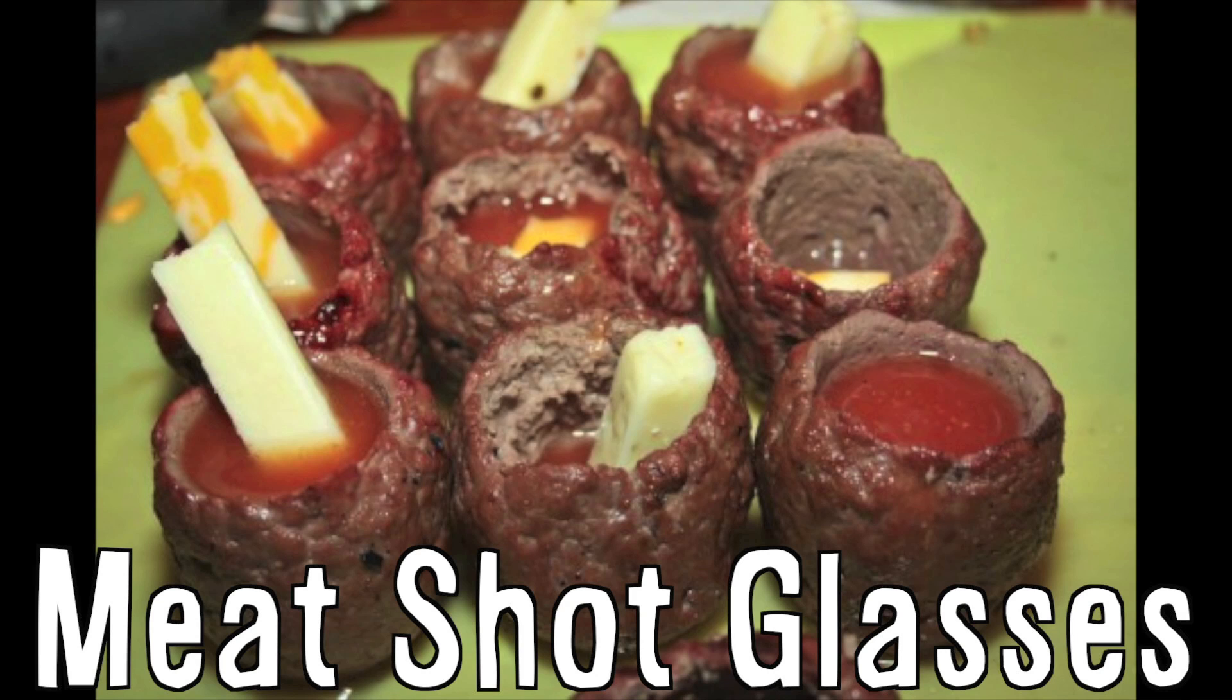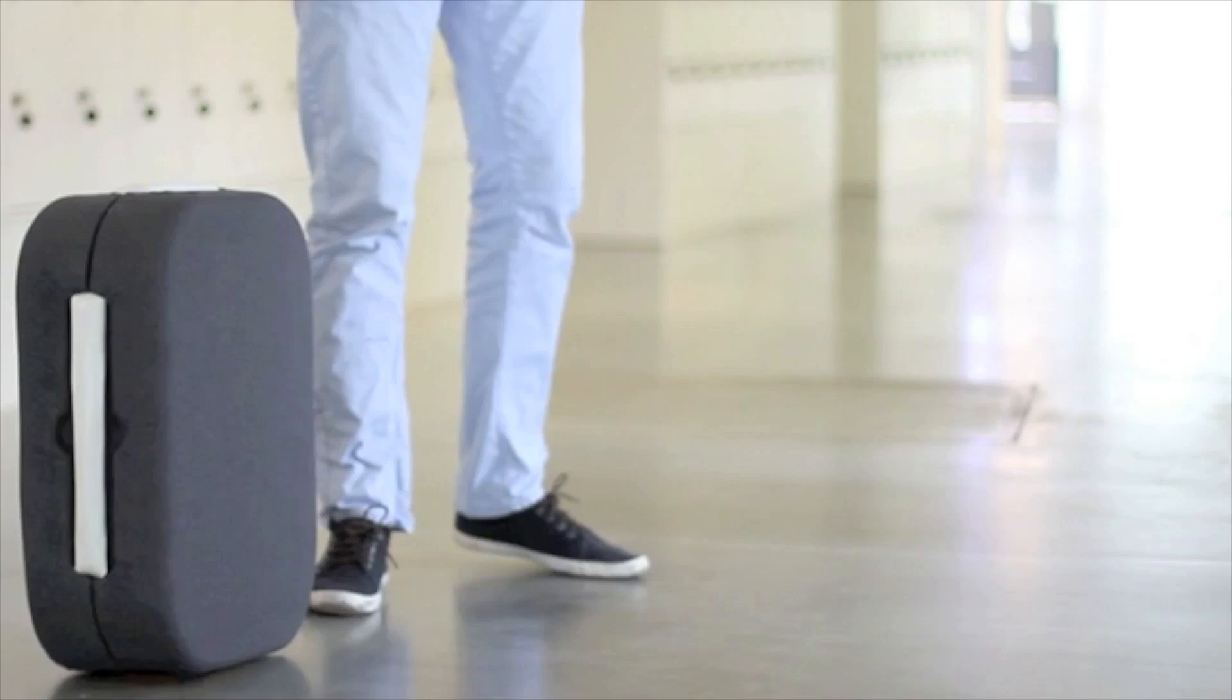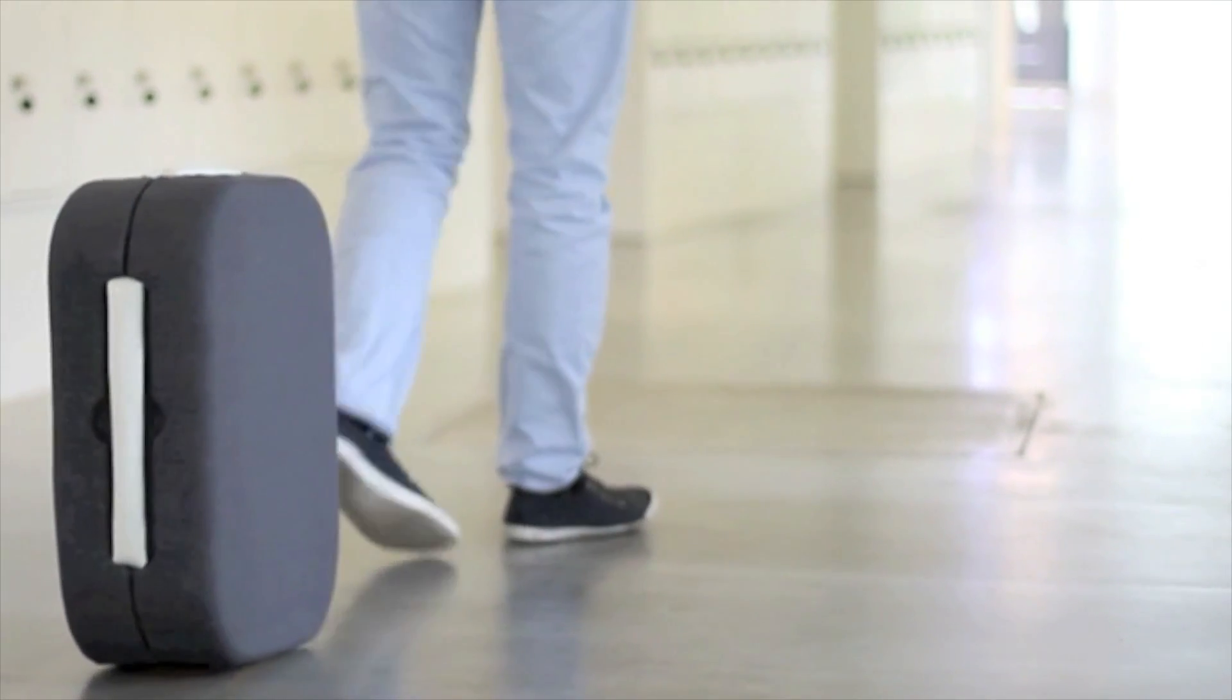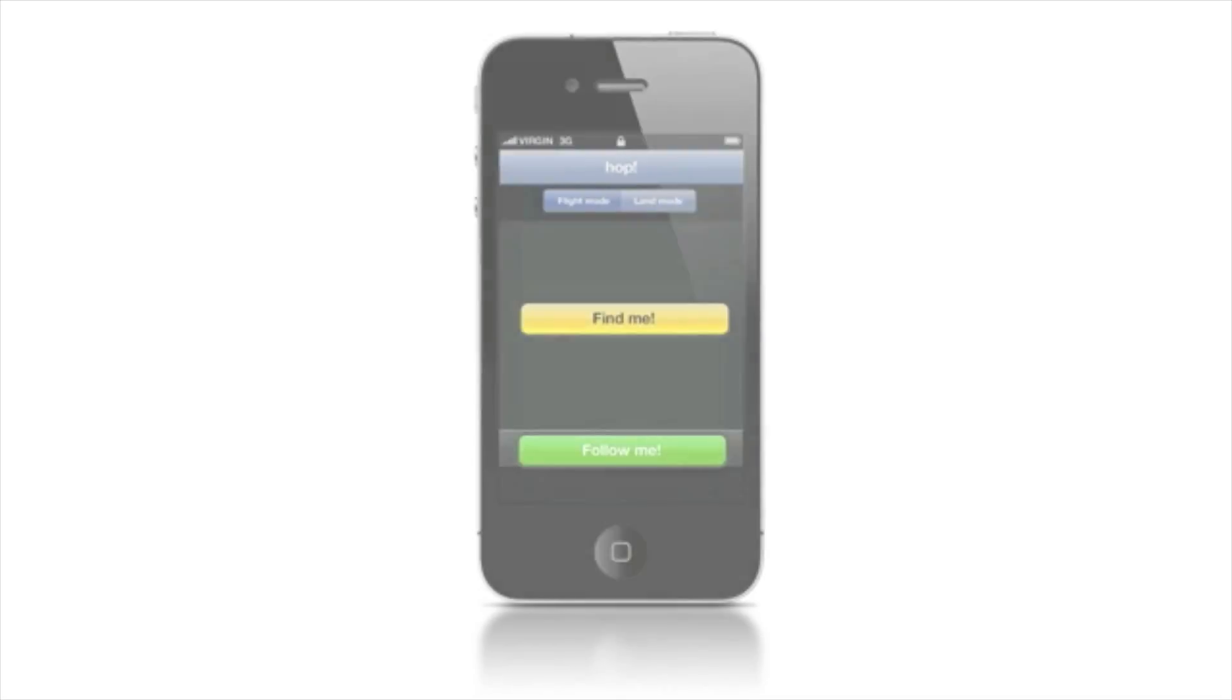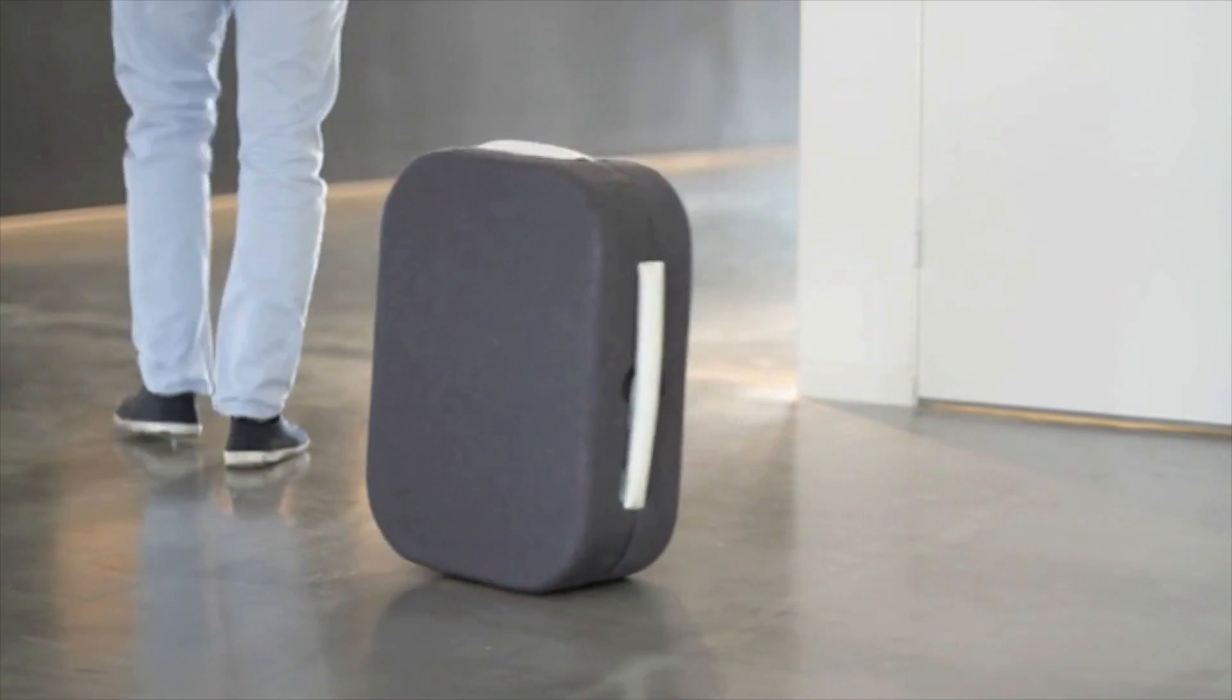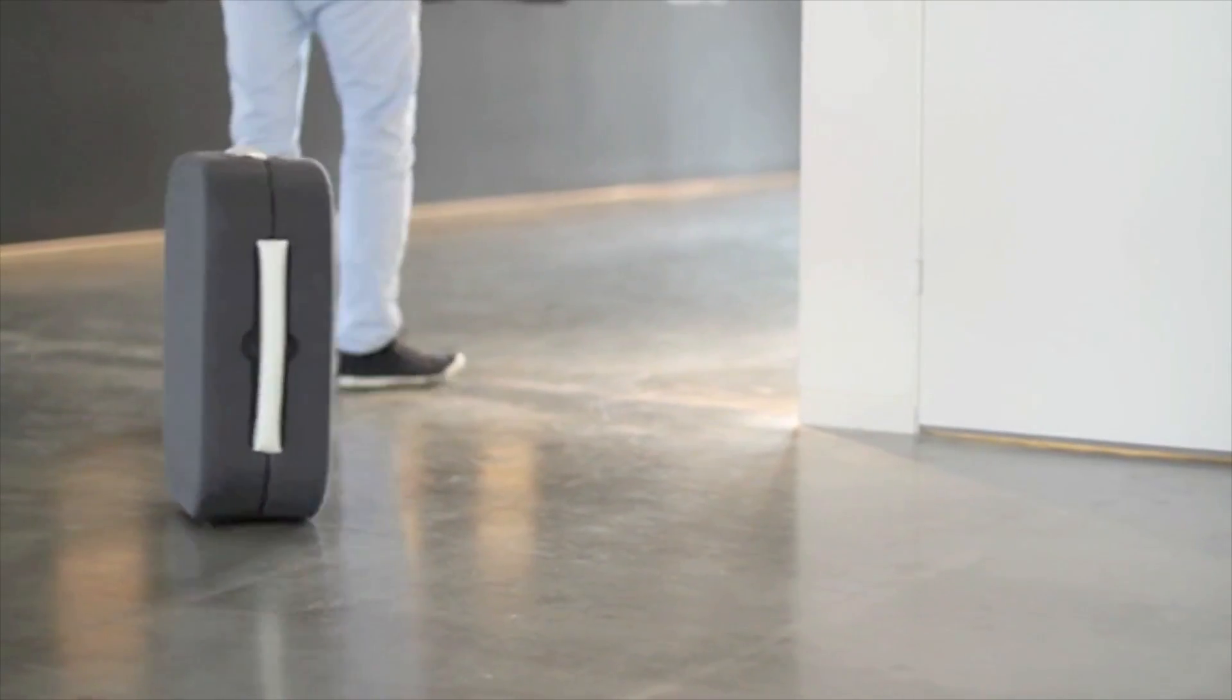Meet shot glasses. Hop is hands-free luggage that follows you around. It connects to your smartphone and if the signal is lost it locks itself and notifies the user. This thing is just a prototype but I mostly just like the idea of a little R2D2 bag following me around.